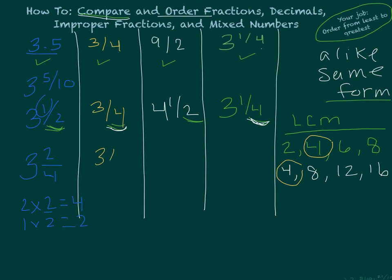3 fourths is still looking good. It has a denominator of 4, so we're good to go. 4 and 1 half, we have to have with a denominator of 4. Same thing here, 2 times 2 gets us 4, so 1 times 2 will get us to 2. And then, finally, 3 and 1 fourth is looking pretty good, so we're going to leave that alone.